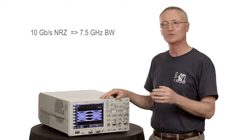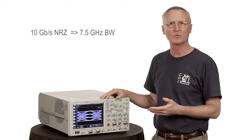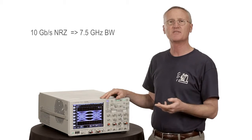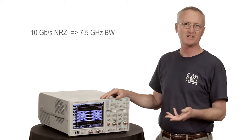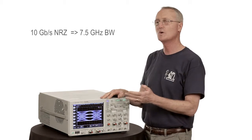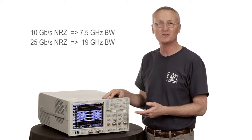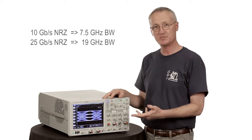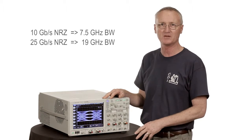For a 25 gig NRZ signal, we had 75% of that, 19 gigahertz of bandwidth.